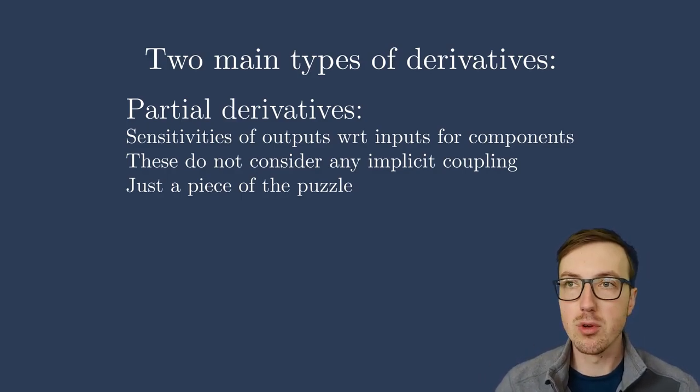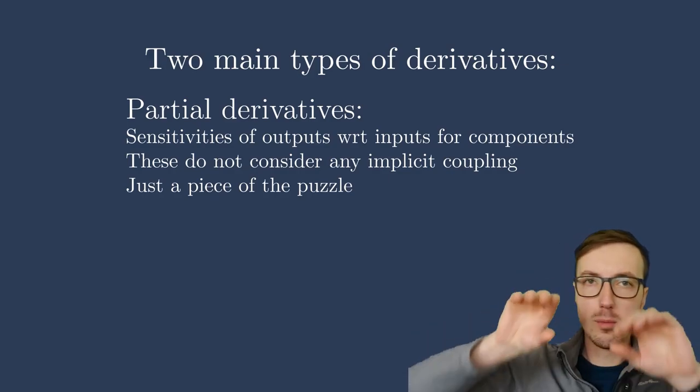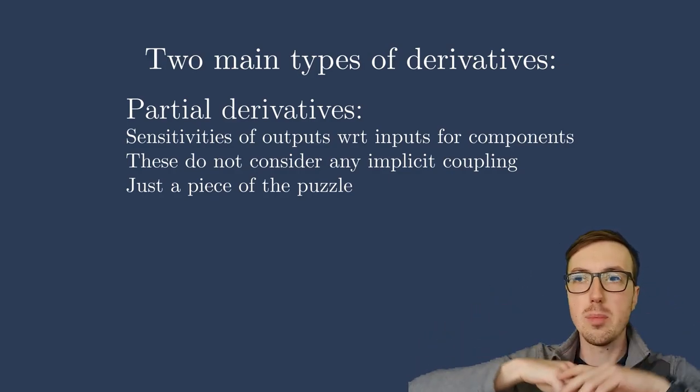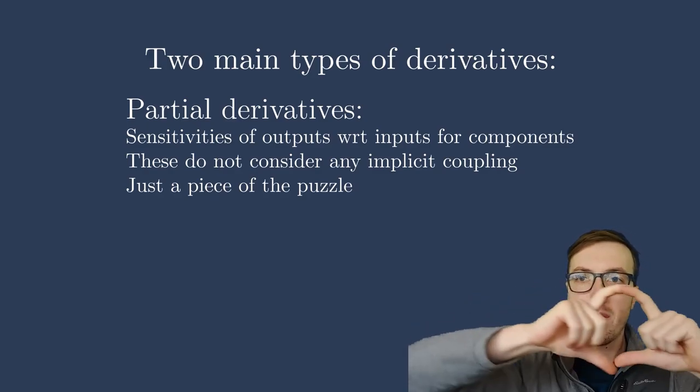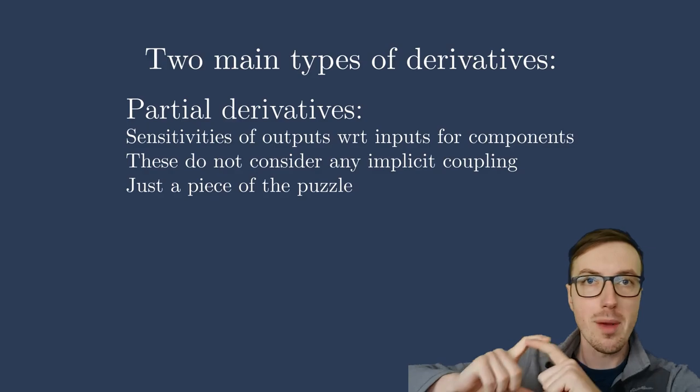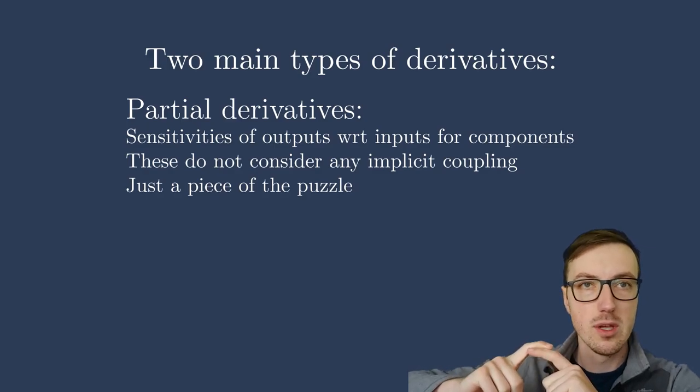I'm painting in broad strokes here, but partial derivatives do not necessarily consider implicit coupling. What I mean by this is that if you have a component here and a component here, and there's this feedback coupling loop, partial derivatives have no notion of that feedback coupling. They only know about what's in their little block here. They only know about what's within the little subsystem that they're dealing with.